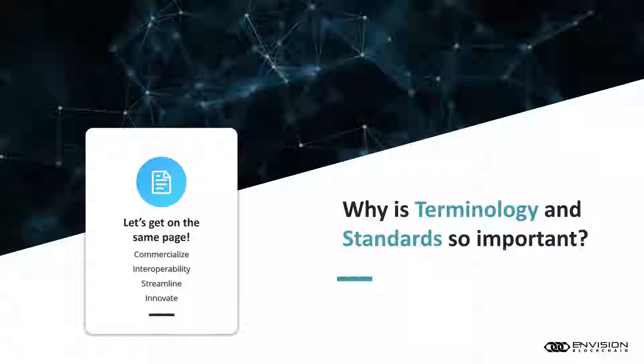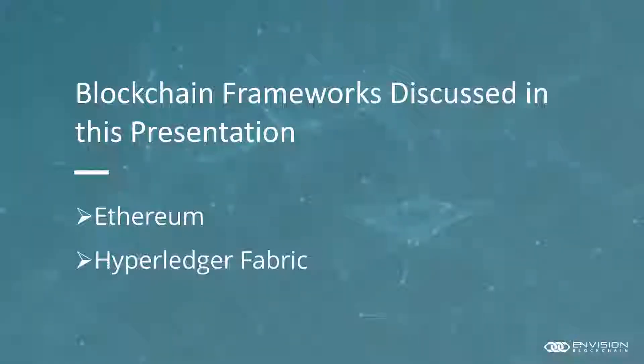If you put a search on the web for what certain terms mean, you're going to find different things in different forums. We're all trying to say the same thing. Over the next few slides, I'm going to touch on a couple of blockchain frameworks: Ethereum and Hyperledger Fabric. There are many more — for example, Corda and Quorum, which is essentially a fork of Ethereum — but we're going to keep it as simple as we can and focus on these two.